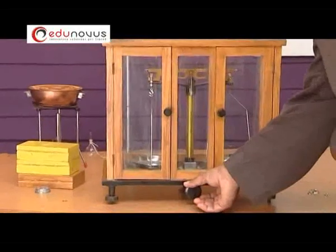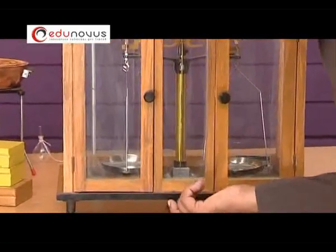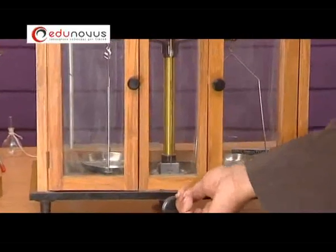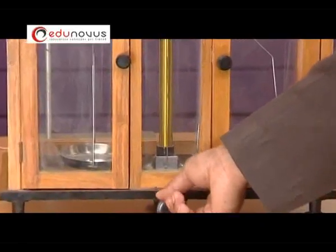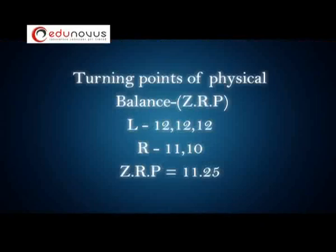Now, turn the handle rightwards and observe the turning points. The left turning points are 12, 12, and 12, and the right turning points are 11 and 10. The zero resting point corresponding to the physical balance is 11.25.